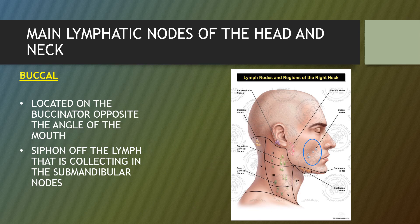Buccal nodes are located on the buccinator opposite the angle of the mouth. They collect lymph from the cheeks, the lateral aspects of the nose, the upper lip, the lateral part of the lower lip, the gums and the anterior thumb.